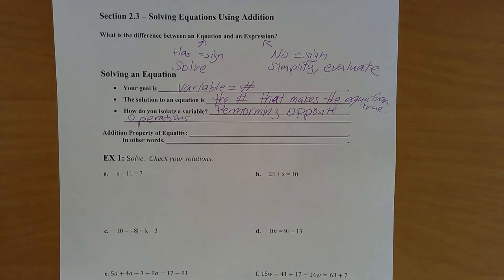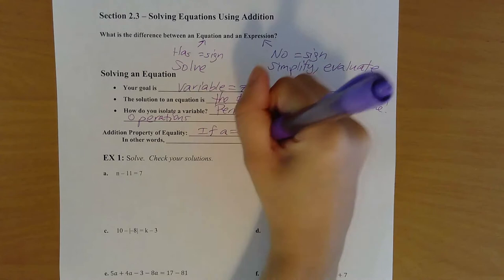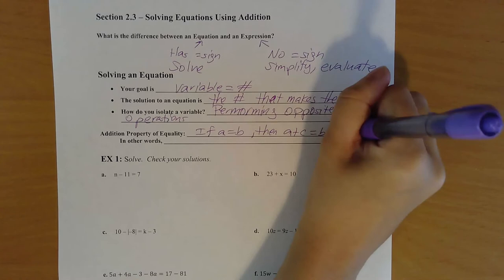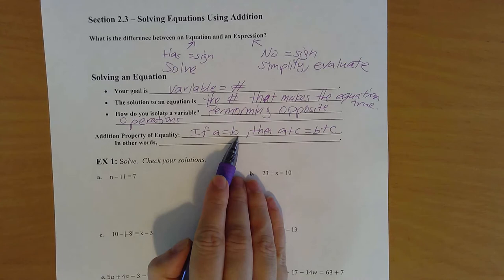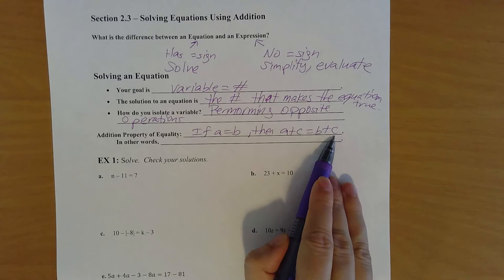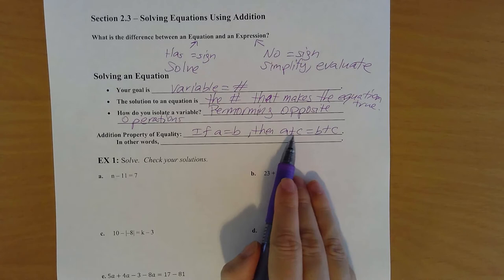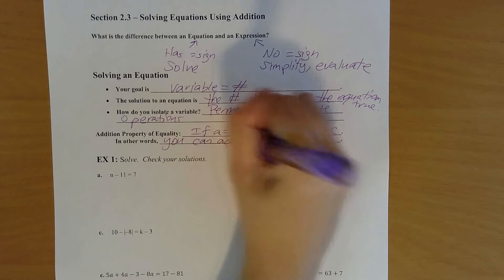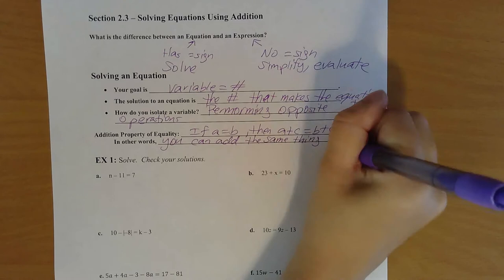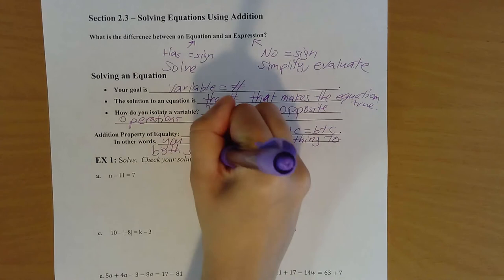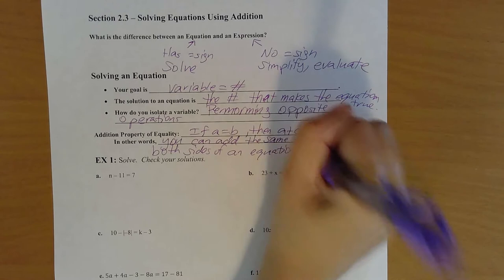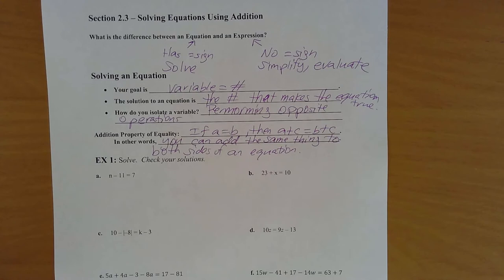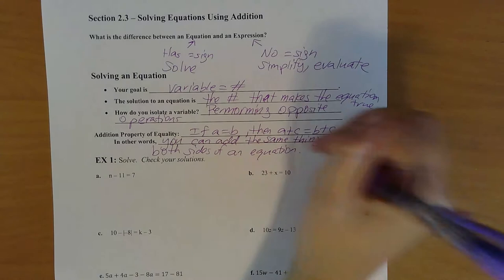My first tool in 2.3 is called the Addition Property of Equality. In a textbook it looks like this: if a equals b, then a plus c equals b plus c. So you have a starting equation a equals b, and then you add c to both sides — it's saying that we're adding the same thing to both sides and it's still equal. In other words, you can add the same thing to both sides of an equation. This also works for subtraction, because subtraction is the same thing as adding a negative number.